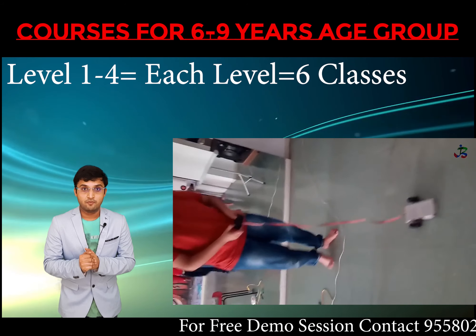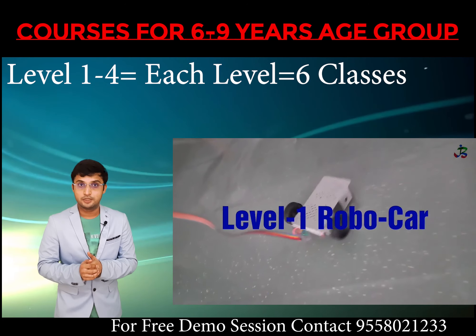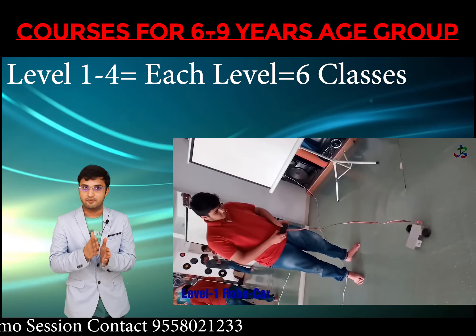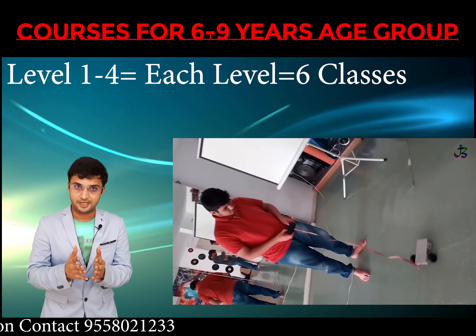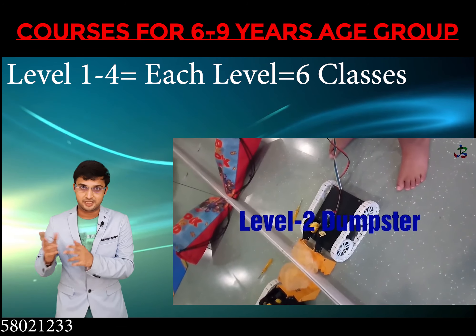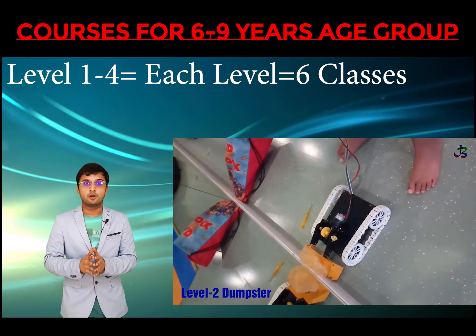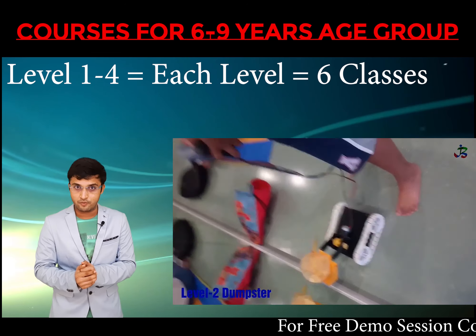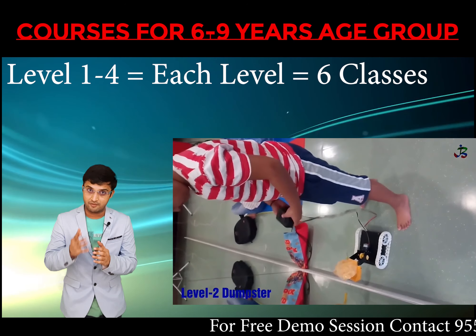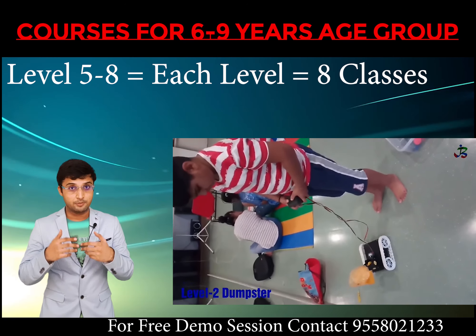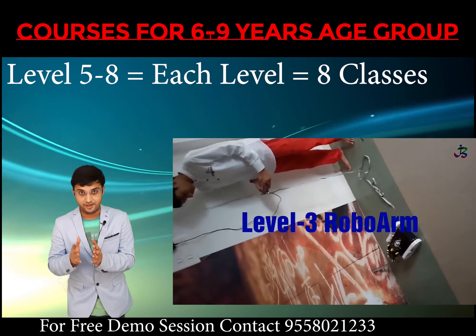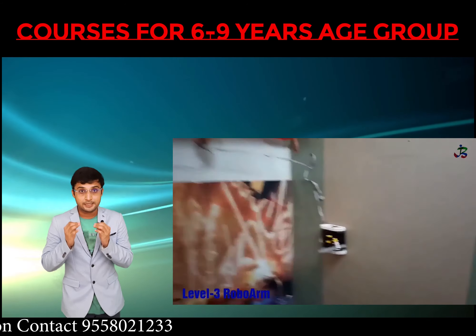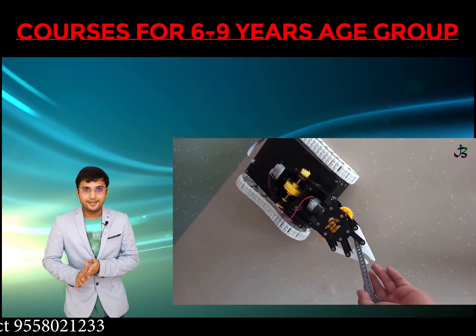In levels one to four, where kids learn to build different types of robots, each level has six sessions — so levels one, two, three, and four each have six classes, giving a total of 24 classes. From level five onward, each level has eight classes, so levels five through eight total 32 classes.